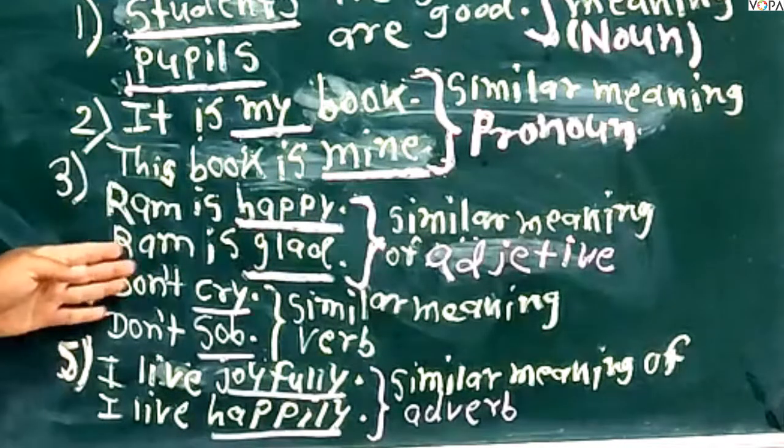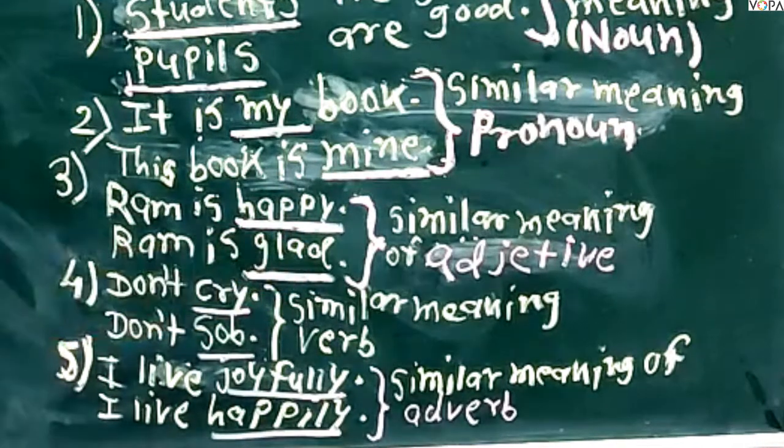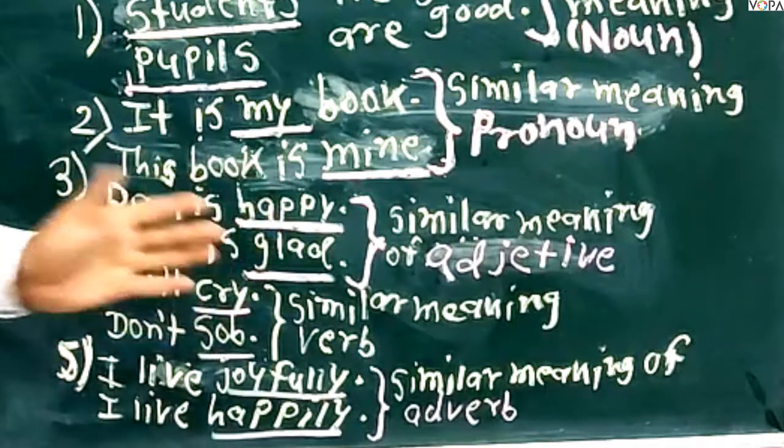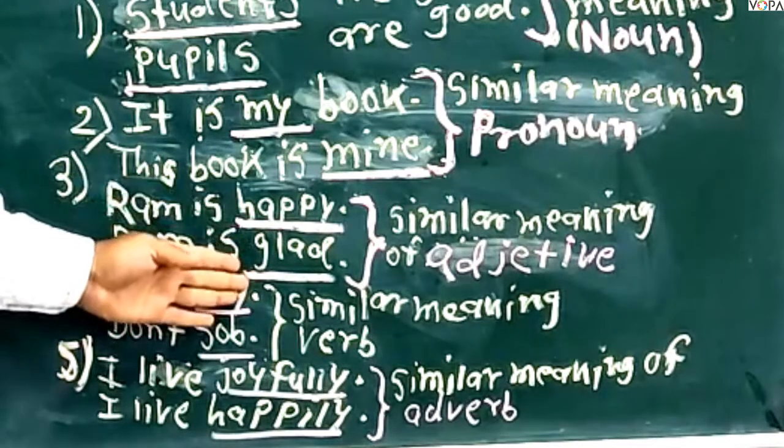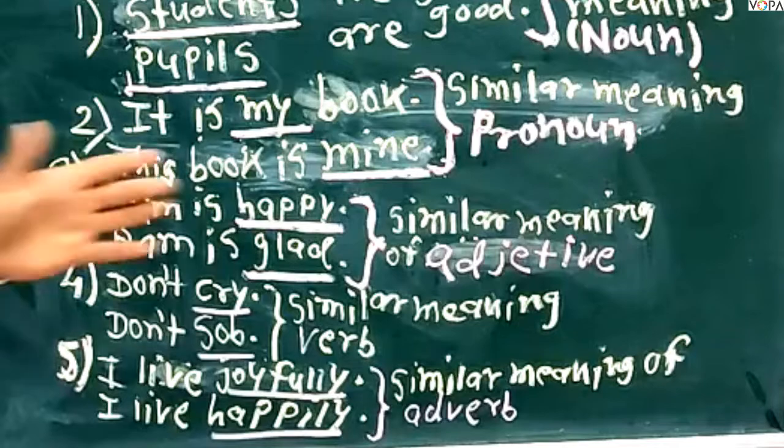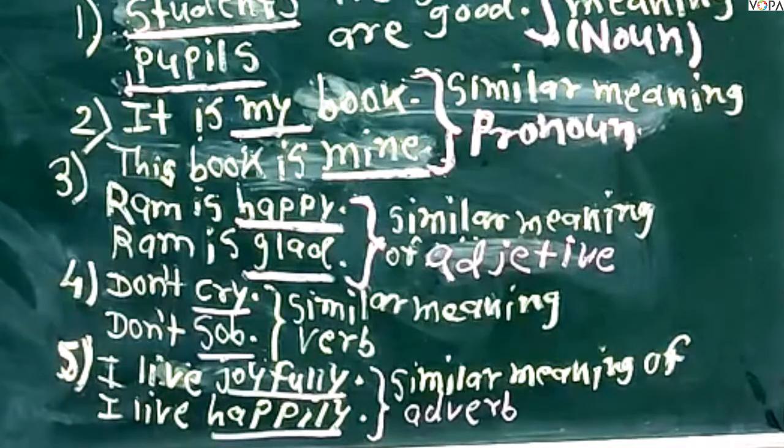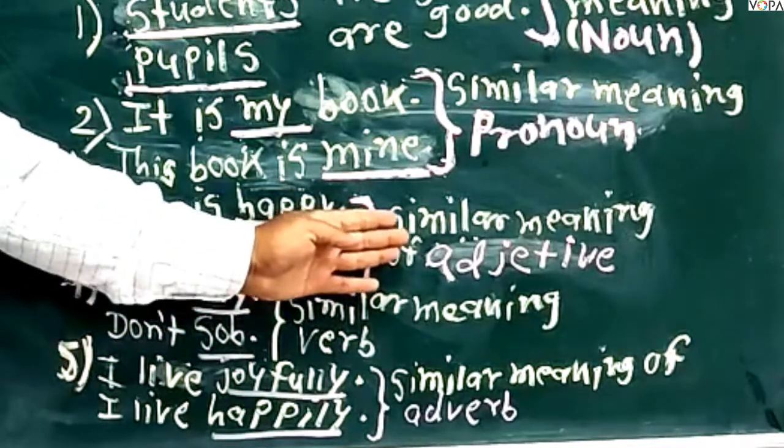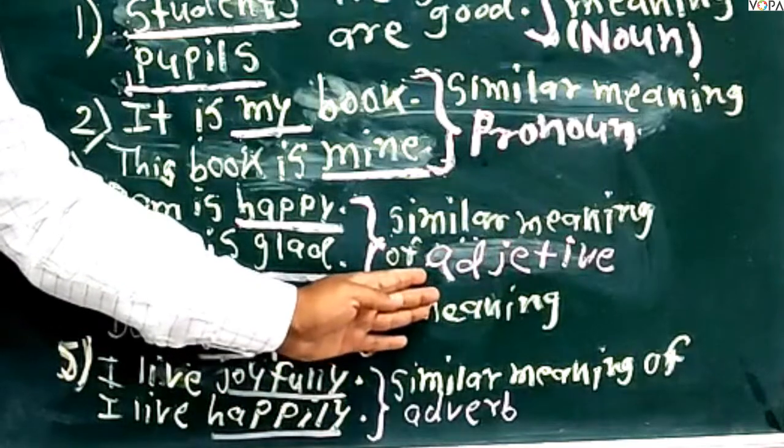Look at the third example. Ram is happy. Ram is glad. 'Ram anandit ahe'. In these two sentences, happy and glad are adjectives, and these are similar meaning words. So we can say this is the example of similar meaning adjectives.